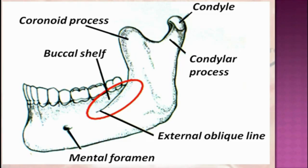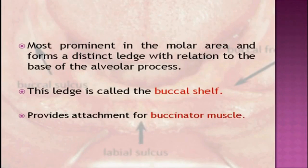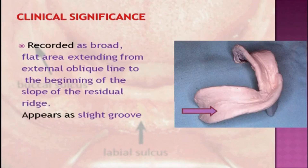The total width of the bony foundation in this region increases as resorption continues, because the width of the inferior border of the mandible is greater than the width of the alveolar ridge. The external oblique ridge extends at an oblique angle across the external surface of the body of the mandible. This ridge begins at the lower anterior edge of the ramus, continues on to the body, and progressively thins out to end near the mental foramen. It is most prominent in the molar area, often forming a distinct ledge in relation to the base of the alveolar process — this ledge is called the buccal shelf. It provides attachment for the buccinator muscle. Clinically, it is recorded as a broad flat area extending from the external oblique line to the beginning of the slope of the ridge.